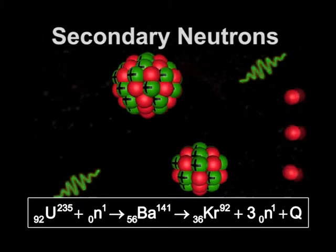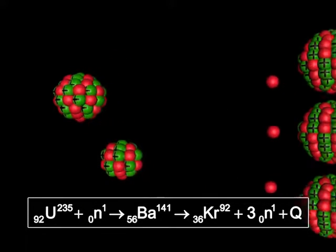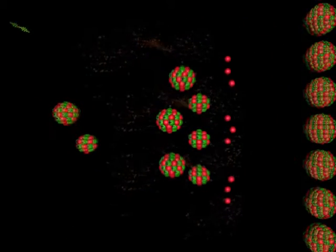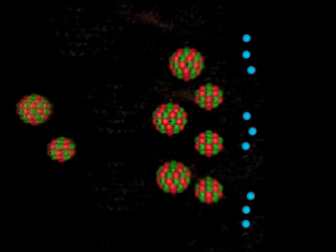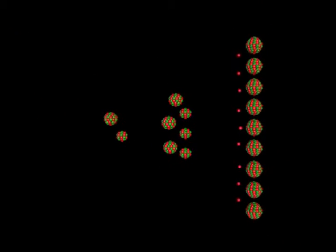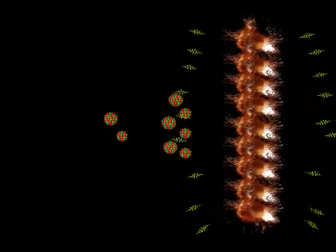may bring about the fission of three more uranium-235 nuclei and produce nine more neutrons, which in turn may cause and continue fission with more and more U-235 nuclei.